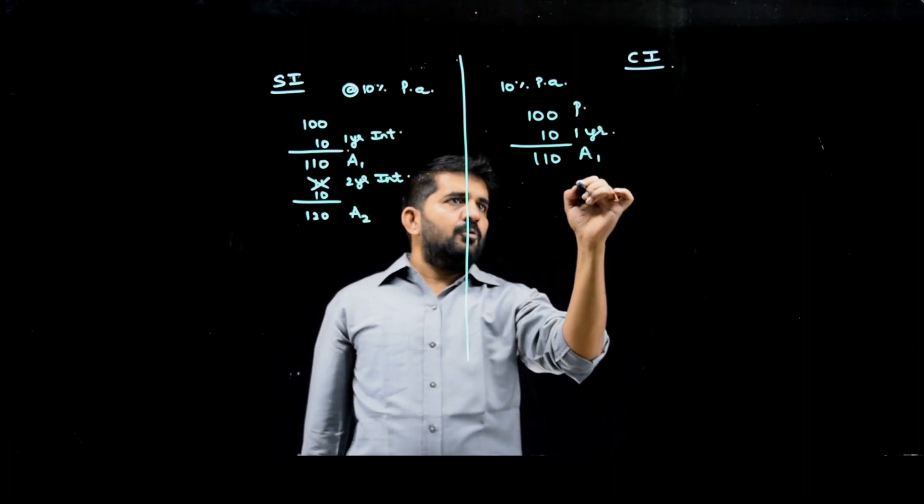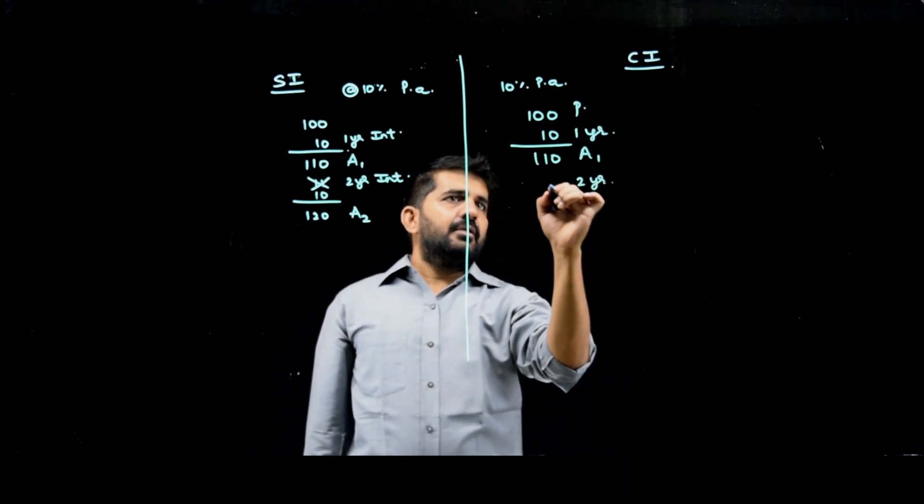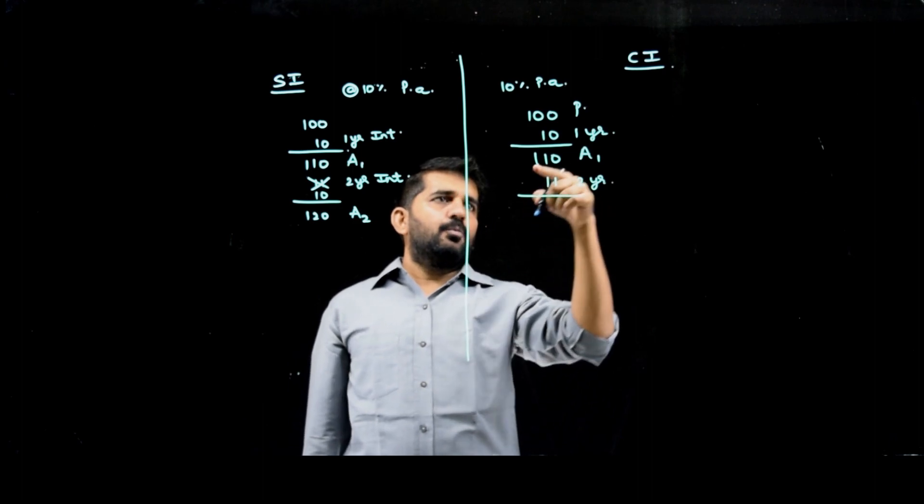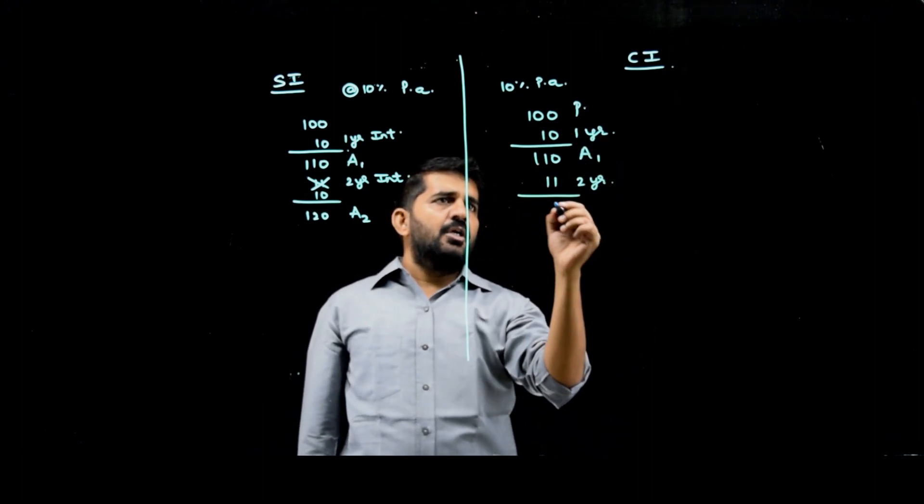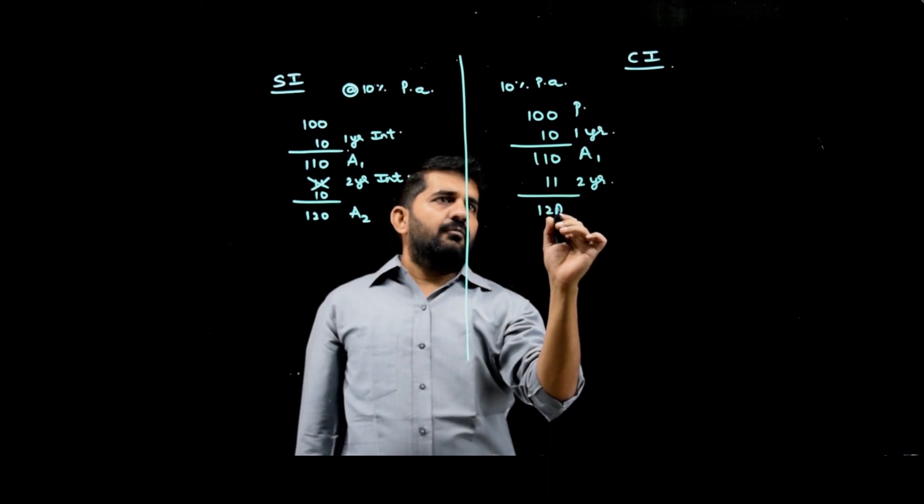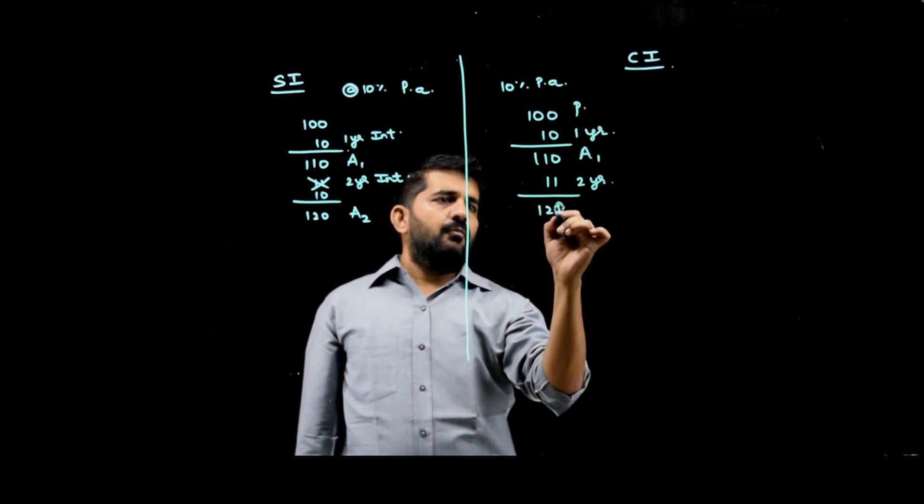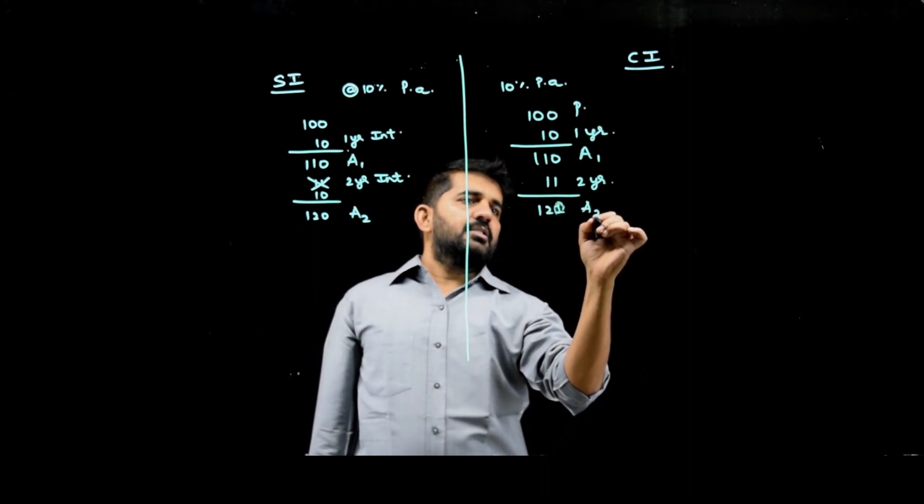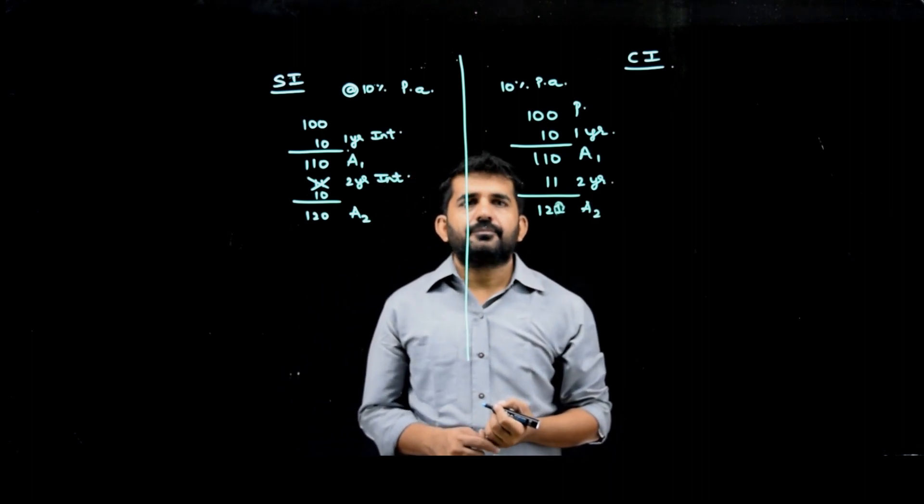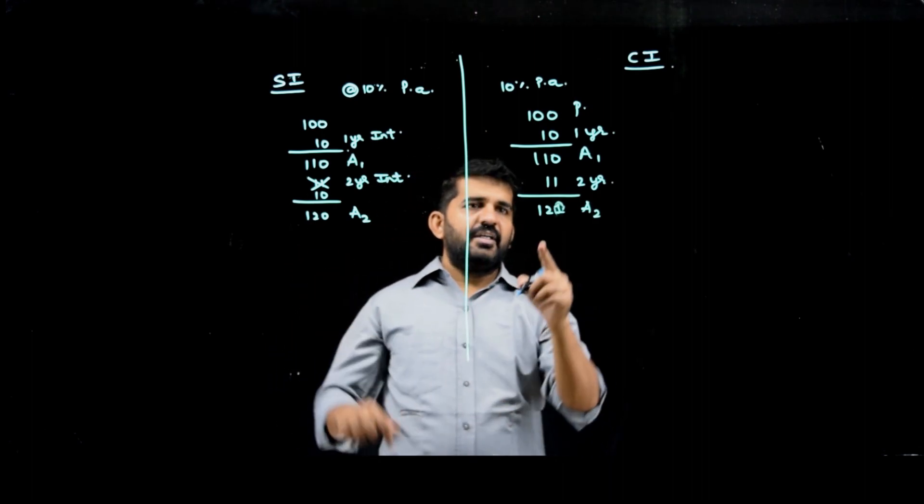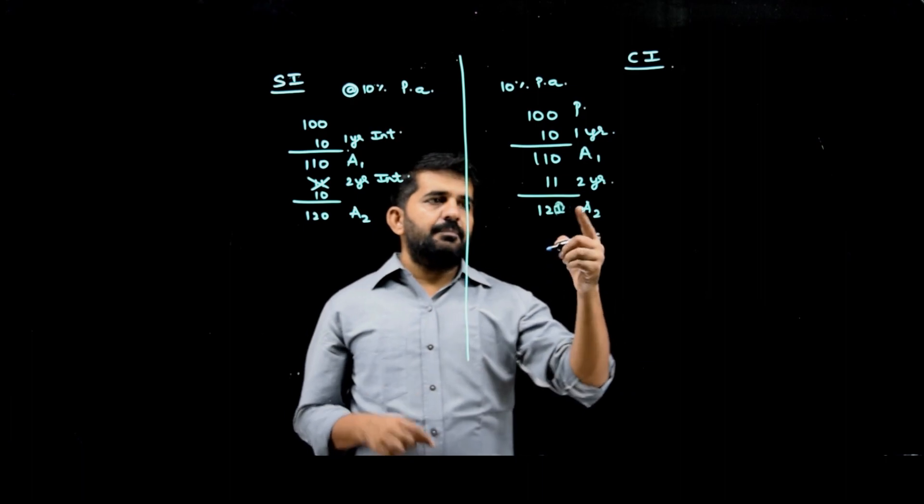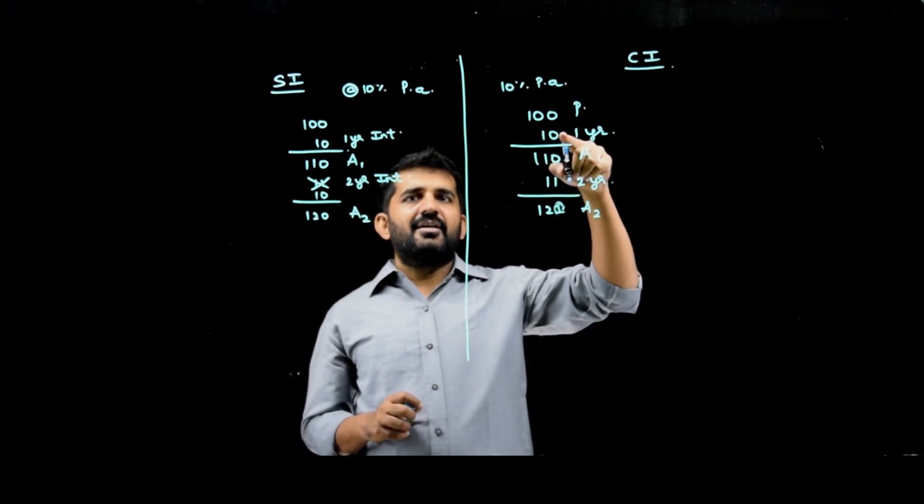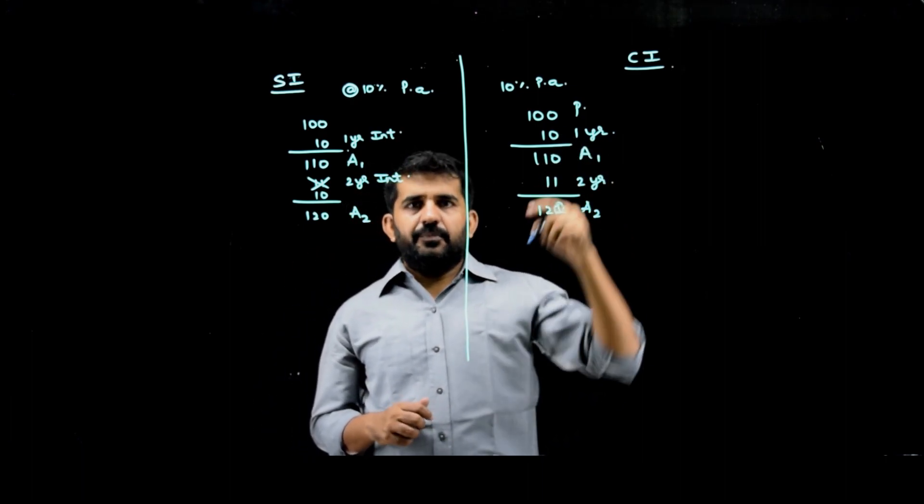But in compound interest in second year, I will be getting 11 rupees. That is, I will get interest on interest and the total amount after two years will be 121. In simple interest I get 120, in compound interest I get 121. The simple difference of 1 rupee is I got interest on interest on this 10 rupees.